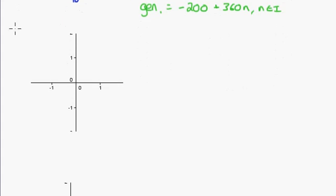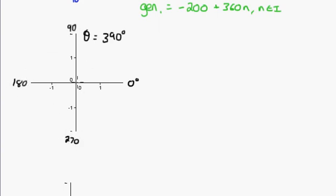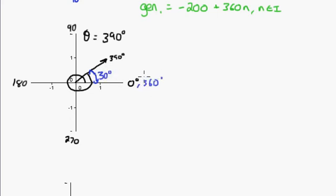The next angle is theta equals 390 degrees. Starting at 0, we go 90, 180, 270, 360, and then 390 is a little bit further — right there. The reference angle is the angle closest to the x-axis. Since 360 plus 30 equals 390, that small angle is 30 degrees. So the reference angle equals 30 degrees.